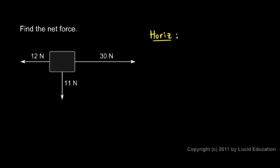Let's look at the horizontal forces first. I have 30 newtons to the right and 12 newtons to the left. And you can think of the 30 newtons to the right as positive and the 12 newtons to the left as negative.